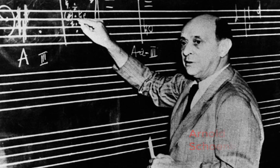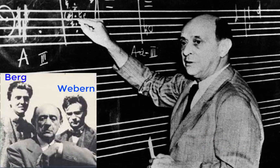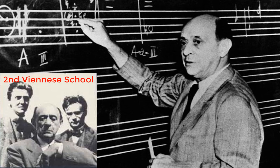Schoenberg was a tonal composer working in and around Vienna, Austria in the early 20th century and had several composition students, most notably Alban Berg and Anton Webern. These three composers — Schoenberg, Berg, and Webern — become known later as the Second Viennese School, not school in the sense of a place to physically go to learn a craft, but a group of people doing the same kinds of things. The First Viennese School would refer to Haydn, Mozart, and Beethoven, who were also working in and around Vienna.